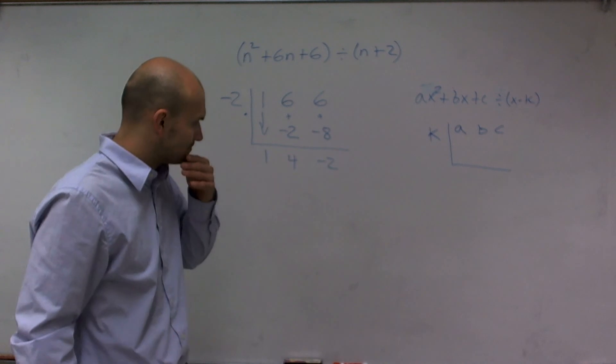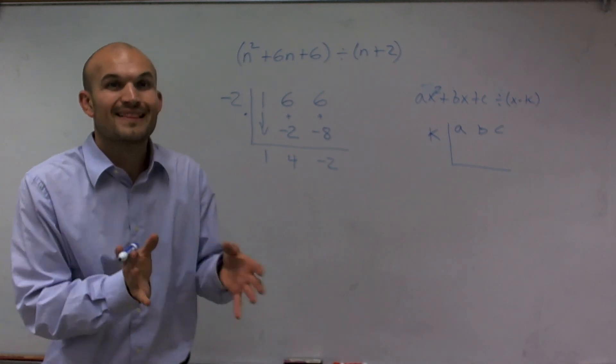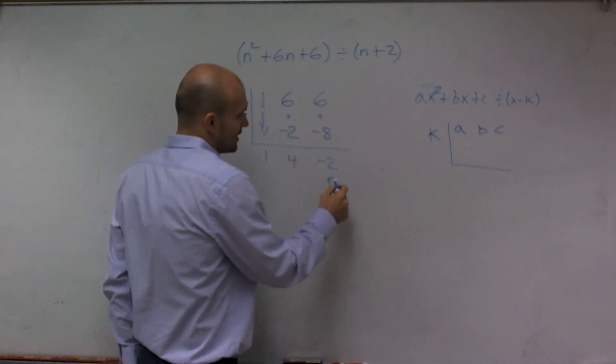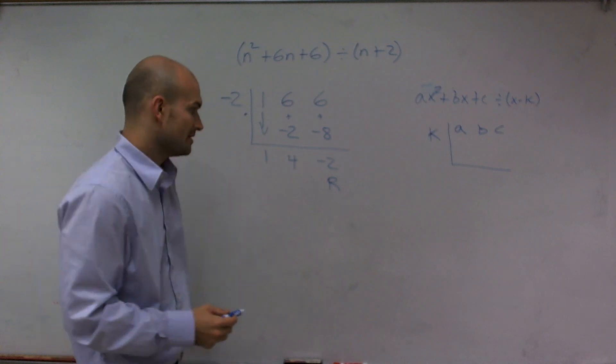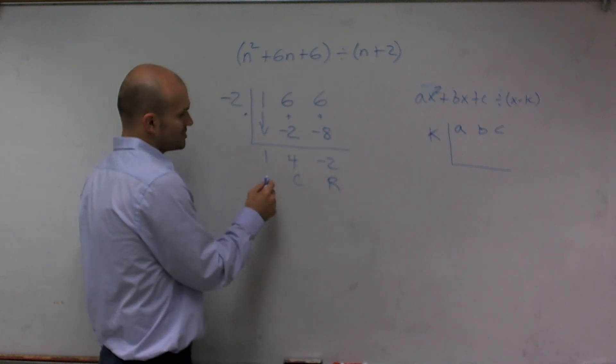So now we need to look at this and say, what are our final answers? Well, if you remember when we were doing long division, if we had a leftover number, that was our remainder. So that's going to be our remainder. Our last term is going to be our constant, and this is going to be our linear variable, or we'll just call it x.